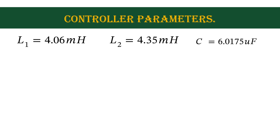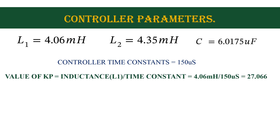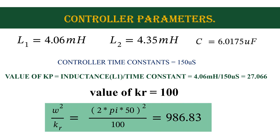Now I will tell you how I calculated controller constants. For that, first we need LCL filter values. Design of LCL filter I have explained in my previous video. These are the values I got after the design. To find the value of KP, first we need to choose a controller time constant. This time constant decides the speed of the controller. Here I have chosen 150 microseconds as my controller time constant. To calculate KP, we divide inductance with time constant — that is 4.06 millihenry divided by 150 microsecond — which gives 27.066. Value of KR I have chosen as 100. Therefore, omega squared by KR will give 986.83. That concludes our controller design.